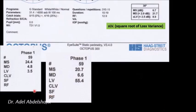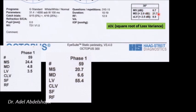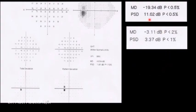Looking at real printout examples: if the mean deviation is slightly affected and the loss variance is almost normal, the square root of that value is around 1-point-something — mild affection but no localized changes. In another example, moderate affection of sensitivity with a high square root indicates localized changes. On the Octopus printout you can see the mean deviation and the SLV, which stands for square root of loss variance — equivalent to standard deviation. We can identify generalized depression, localized changes, or both, just by reading these two numbers.